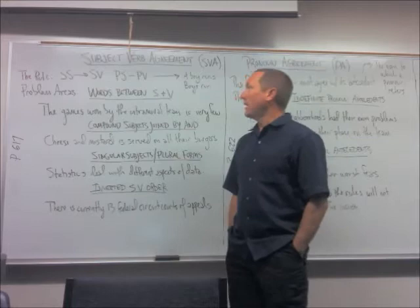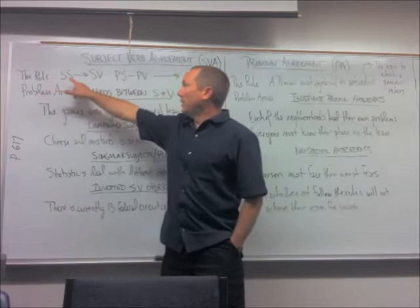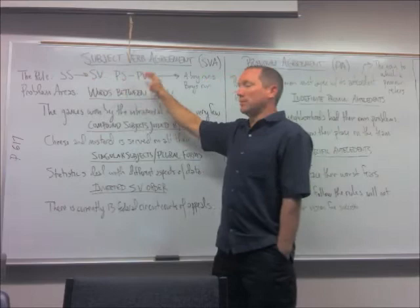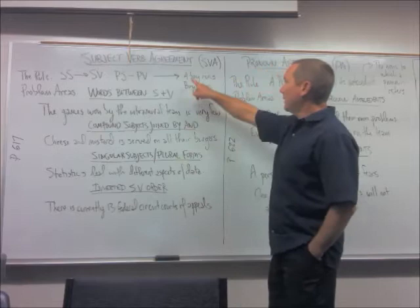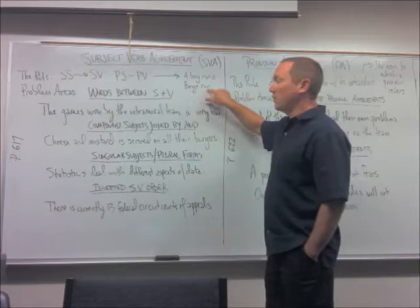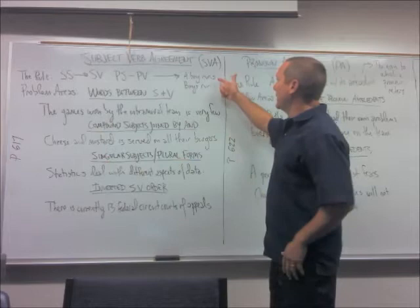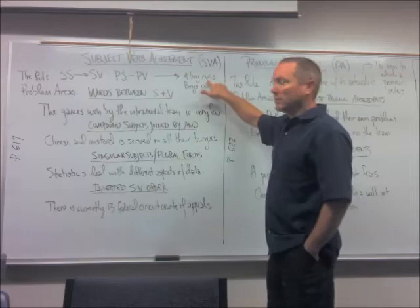Subject-verb agreement. The rule is very simple — I've done some abbreviations here to fit all this on the board. A singular subject needs a singular verb, whereas a plural subject needs a plural verb. Very obvious, even elementary some would say. It just means that a boy runs, but boys run. Different subjects get corresponding verb forms based on number. Interestingly, with simple present tense verbs, the singular verb has an S on the end, where the plural verb does not.